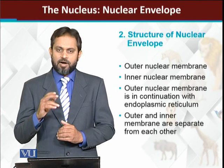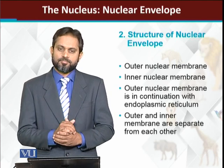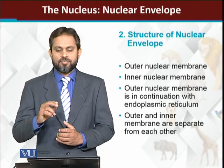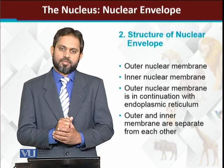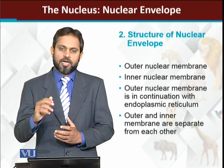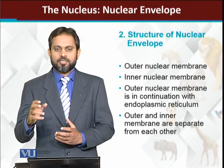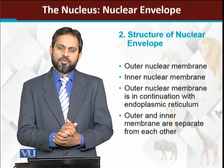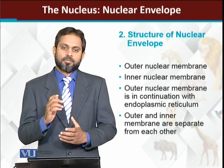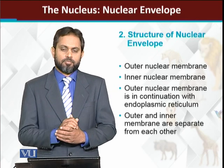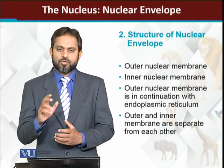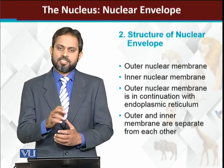The two membranes are the outer nuclear membrane and the inner nuclear membrane. If we look at the outer nuclear membrane, it is connected with the endoplasmic reticulum. Because of this connection, the characters of the endoplasmic reticulum are almost found on the outer nuclear membrane as well — for example, the presence of ribosomes. Ribosomes are present on the outer nuclear membrane, just as they are on the endoplasmic reticulum.